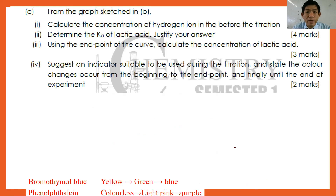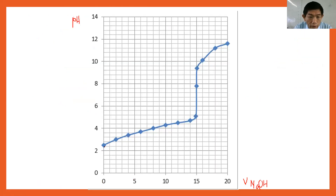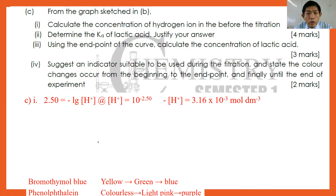For part C, from the graph: number one, calculate the concentration of hydrogen ions before the titration begins. Since this is a monoprotic acid, you read pH = 2.5 from the graph — that is where the volume of NaOH equals zero. So [H⁺] = 10^(−2.5), which gives 3.16 × 10⁻³ mol dm⁻³. Don't forget the units.